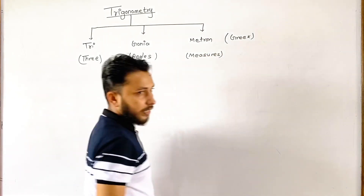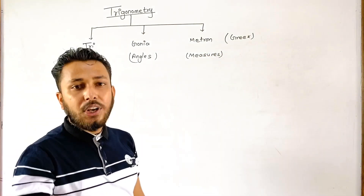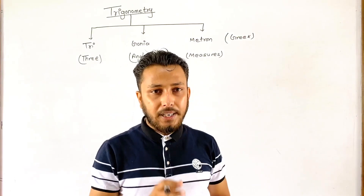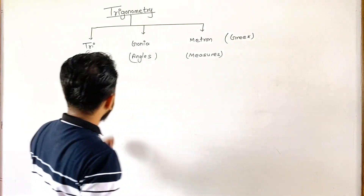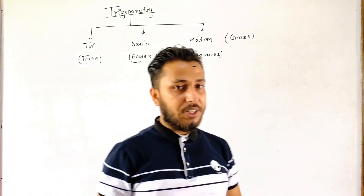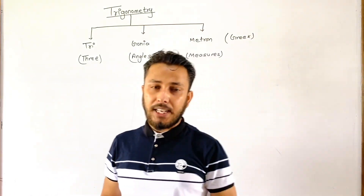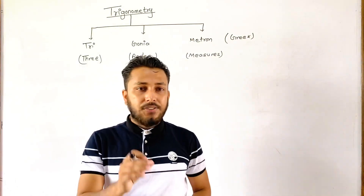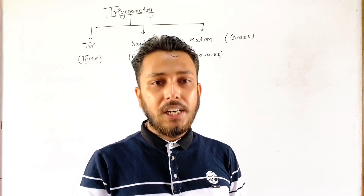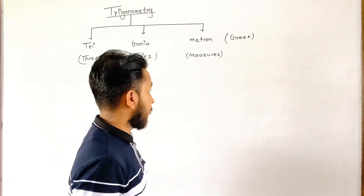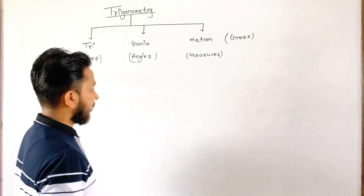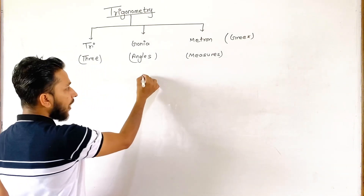That means trigonometry is the branch of science or mathematics which deals with the measure of three angles and their measurement. In common words, we can say that trigonometry deals with the angles and sides, especially of right angle triangles.